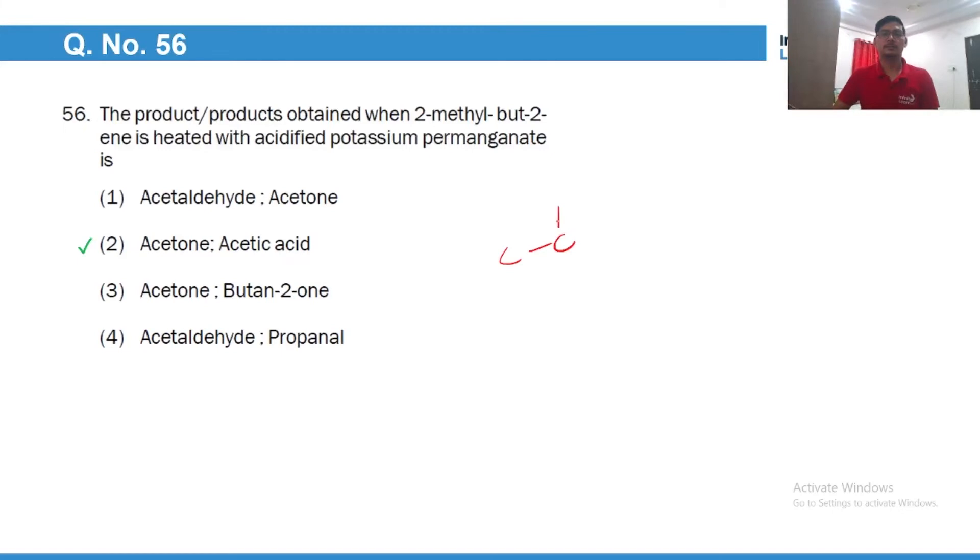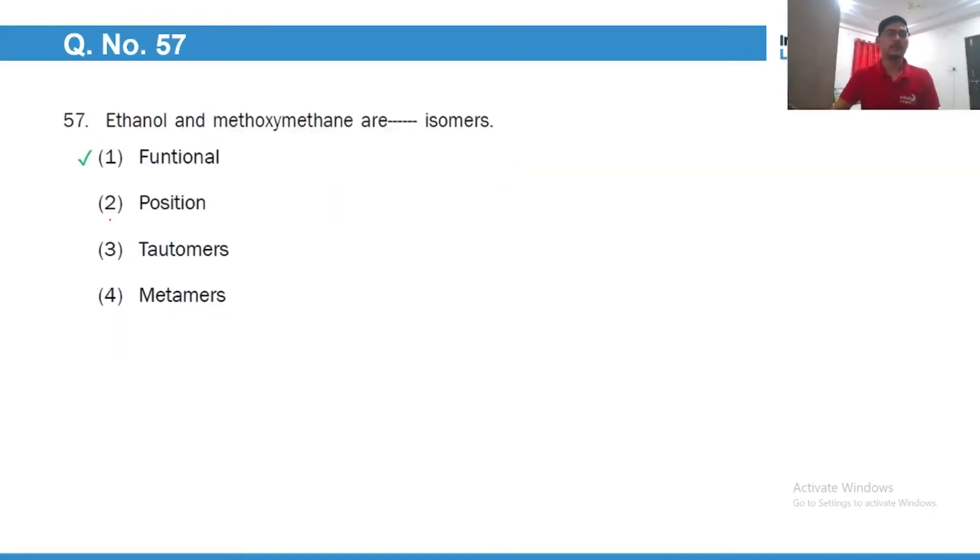When 2-methyl-butene is heated with acidic potassium permanganate, because it's a strong oxidizing agent the double bond cleaves and we get one equivalent of acetone and one equivalent of acetic acid. Ethanol is an alcohol whereas methoxymethane is an ether. So of course same molecular formula but different functional groups, so they are related to each other as functional isomers.